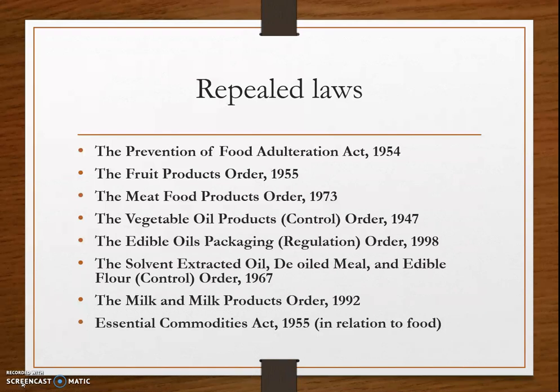Next comes the Fruit Products Order, promulgated under Section 3 of the Essential Commodities Act 1955, with an objective to manufacture fruit and vegetable products while maintaining sanitary and hygienic conditions. The Meat Food Products Order 1973 was formulated to enforce strict quality control on the production and processing of meat and food products.